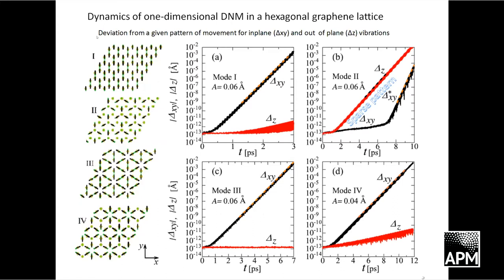We studied the stability of one-dimensional delocalized modes in graphene by investigating the deviation from a given pattern as a function of time, for both in-plane and out-of-plane deviations. For modes one, three, and four, deviations from in-plane vibrations begin to increase with a considerable slope. For mode number two, we first see a sharp increase in out-of-plane deviations, probably because this mode has a rather sparse pattern — when particles move within this mode they do not see any obstacles — so destabilization is initiated in out-of-plane vibrations.